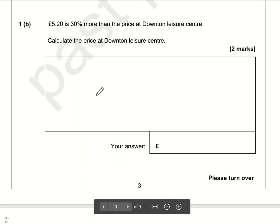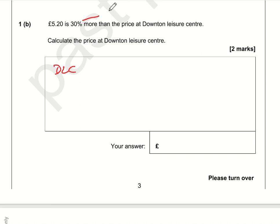£5.20 is 30 percent more than the price at the Downton Leisure Centre. The Downton Leisure Centre price has been increased by 30 percent. The multiplier for 30 percent is 0.3, but if we want to increase an amount by 30 percent, we add one to this value, so we multiply by 1.3.